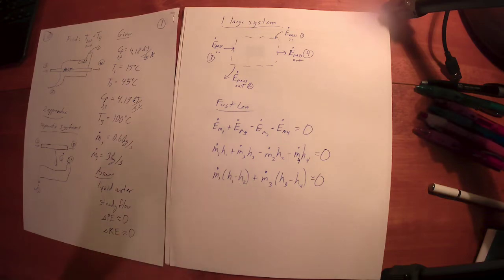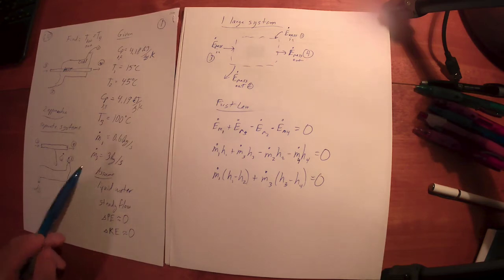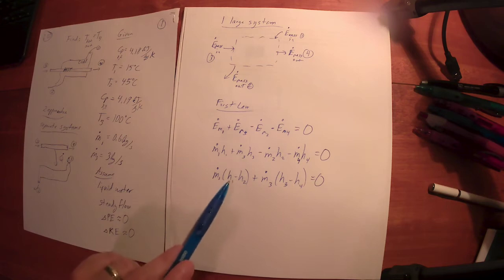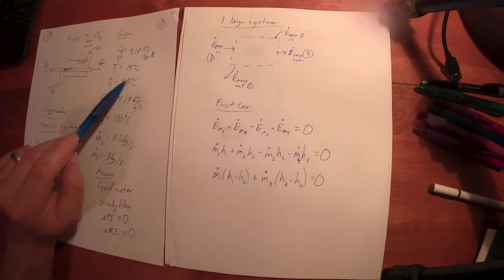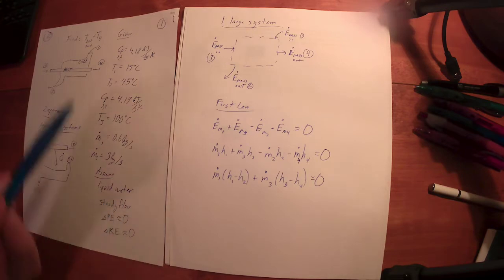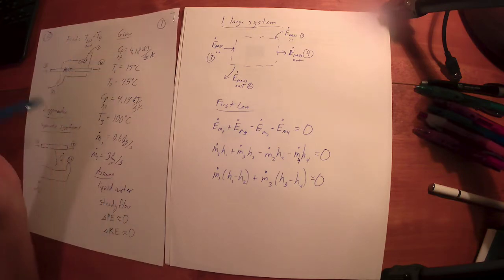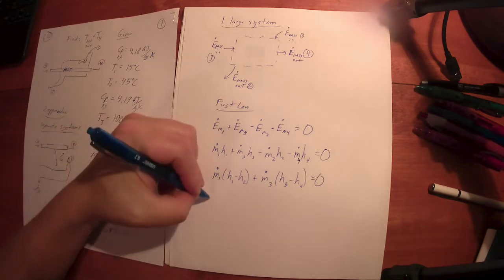The first question whenever I need to find a property: what is our substance? Our substance is liquid water. So I could go look up enthalpy values for saturated liquid water at the given temperatures, and that would be just fine. But the problem statement was nice enough to give me specific heats, so I'm going to use those.